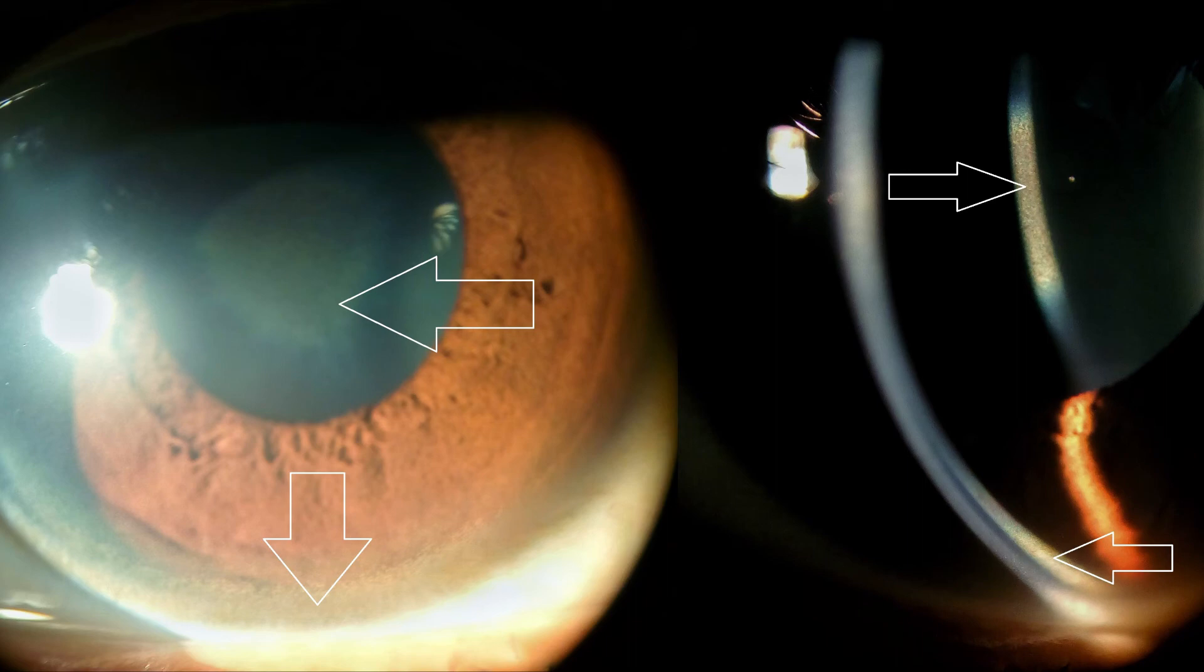They look like they are in the pupil, but remember, the pupil is not an actual black surface, it is just a hole. So the sunflower cataracts are either in front of the pupil in the anterior chamber, or behind the pupil in the lens.